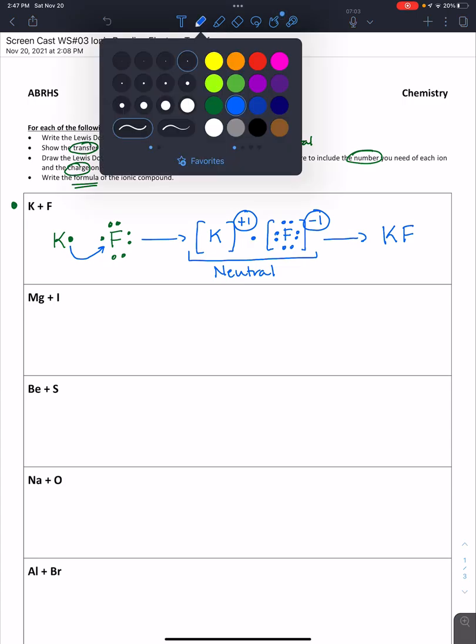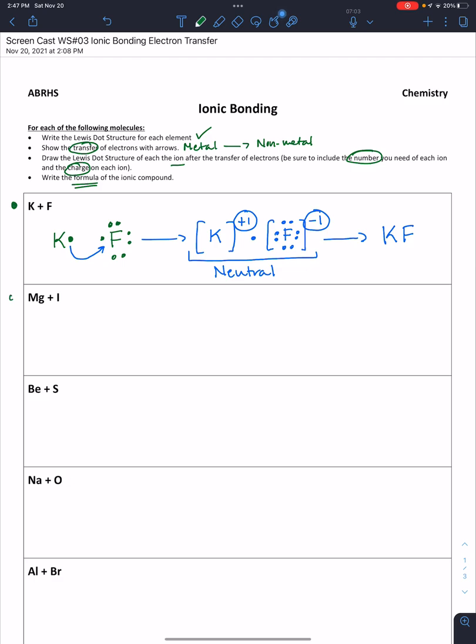Now let's look at magnesium and iodine. We again start by drawing the Lewis dot symbol of our atoms. We have two dots for magnesium as an alkaline earth metal in group 2. For iodine, again a halogen in group 17, we have seven valence electrons, so seven dots.